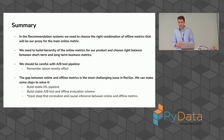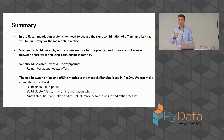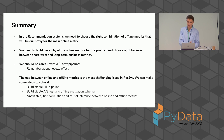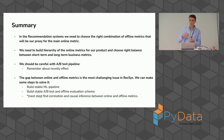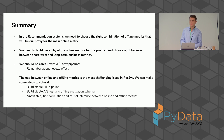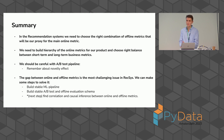In summary, in recommendation systems we need to choose the right combination of offline metrics that will be our proxy for the main online metrics — and choosing the right offline metrics is even more important than choosing the right models. To increase product value step by step, build a hierarchy of online metrics, choose the right balance between short-term and long-term effects, and test hypotheses via A/B test. Remember about the novelty effect, remember about the feedback loop effect, and accept that we will always have a gap between online and offline metrics.